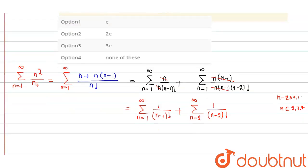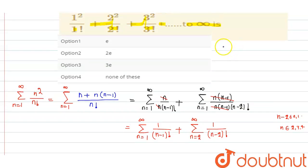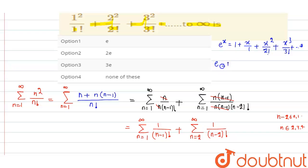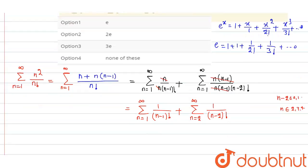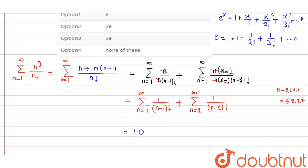We know the expansion of e^x is: 1 + x/1! + x²/2! + x³/3! + ... to infinity. Substituting x=1, we get: 1 + 1 + 1/2! + 1/3! + ... which goes to 0 as the terms approach infinity. So both summations equal e.